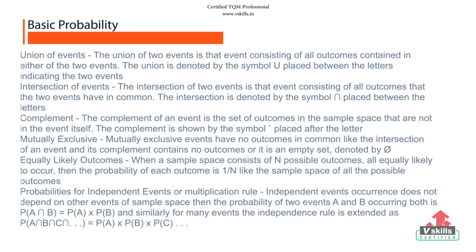The union of two events is that event consisting of all outcomes contained in either of the two events. Intersection of events is that event consisting of all outcomes that the two events have in common. The complement of an event is the set of outcomes in the sample space that are not in the event itself. Mutually exclusive events have no outcomes in common.